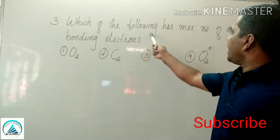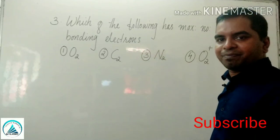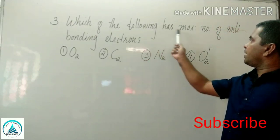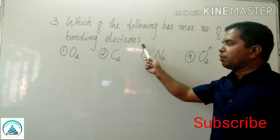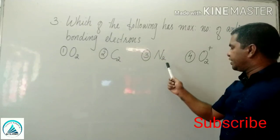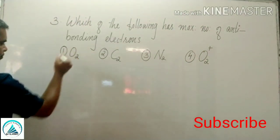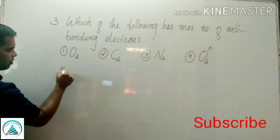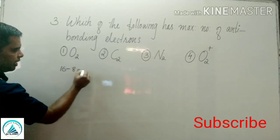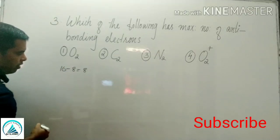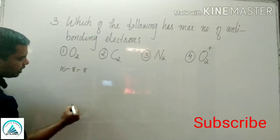Third question: which of the following has the maximum number of anti-bonding electrons? Options are O2, C2, N2, and O2 plus. For O2: total number of electrons 16. 16 minus 8, subtract 8 electrons, remaining 8 electrons. Apply the shortcut for calculating bonding and anti-bonding electrons.